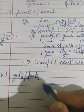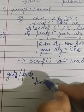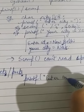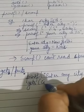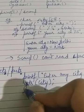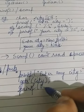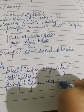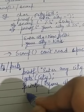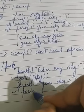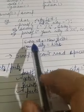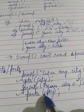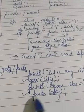To use gets and puts: declare a char array city, then write printf 'Enter any city', then instead of scanf write gets(city). For output, use puts(city) — just write the array name inside the bracket. If you input 'New Delhi', the answer will be 'New Delhi'. gets is able to read spaces, which is the key advantage over scanf.